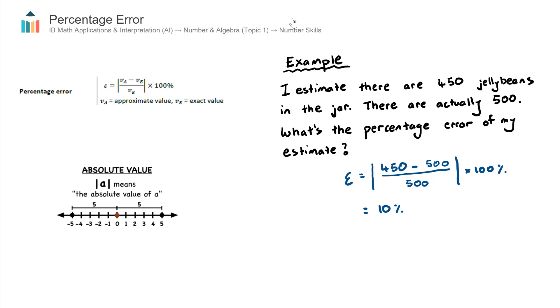Therefore the percentage error of my estimate, when I estimated that there were 450 jelly beans, was 10%. Someone with a better guessing capability might have said there was 490 jelly beans, and the percentage error would be less, maybe only 1%. Or a really bad estimator might say there was 750 jelly beans, and their percentage error would be a lot higher, maybe 20 or 30%.